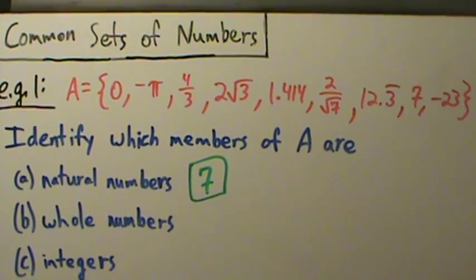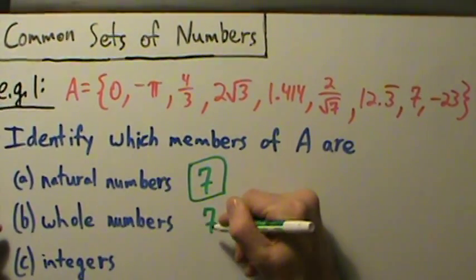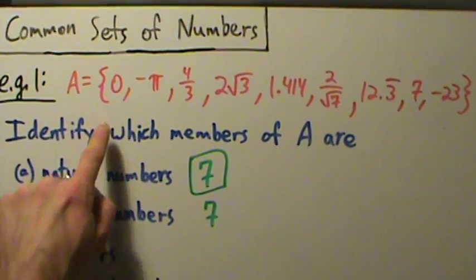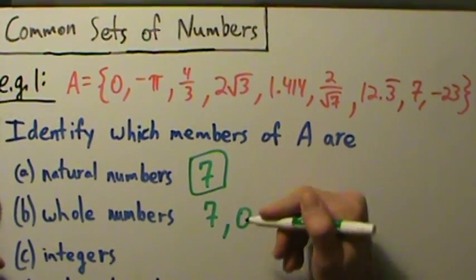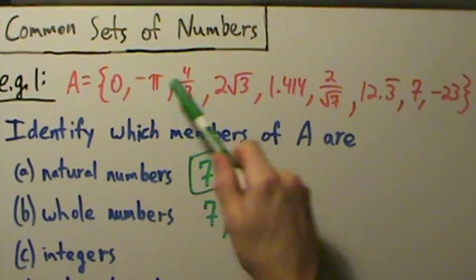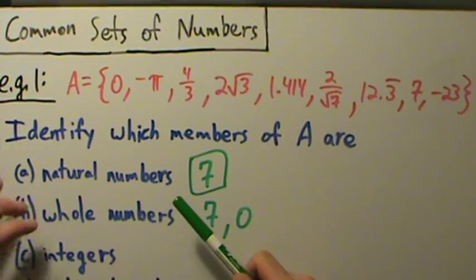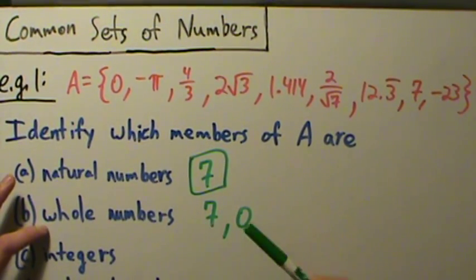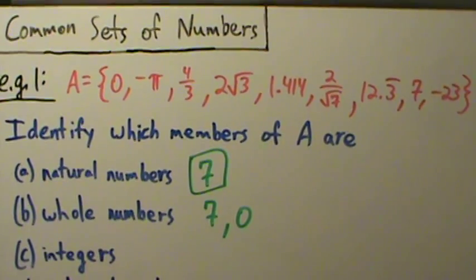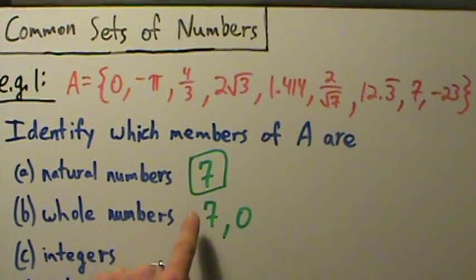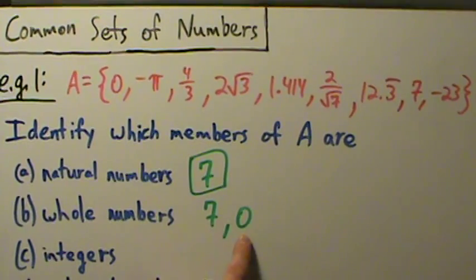Okay, how about whole numbers? Well, every natural number is a whole number, so first we list out seven because every natural number is a whole number. What else is a whole number? Zero. Zero is a whole number, right? And that's actually it, because the whole numbers are zero plus all the natural numbers.